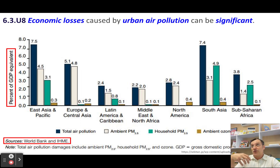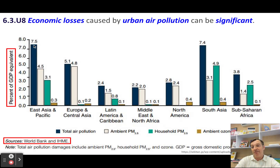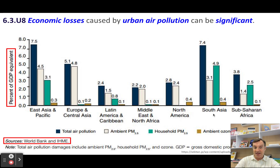Smog has significant impacts on human health and the health of other organisms, and also really significant economic costs. Looking at this as a percentage of GDP: here in East Asia and the Pacific, about seven and a half percent of total GDP equivalent is lost due to urban air pollution. In South Asia — India, Pakistan, Sri Lanka, Bangladesh — it's very similar, almost seven and a half percent.